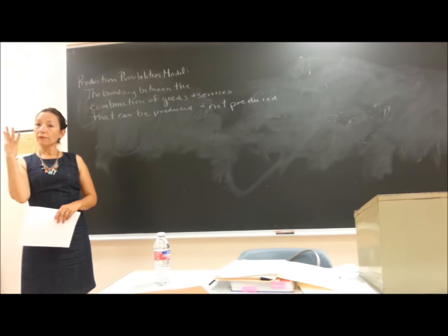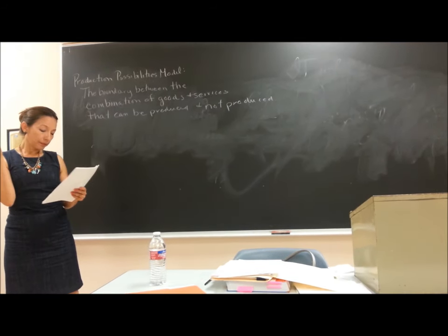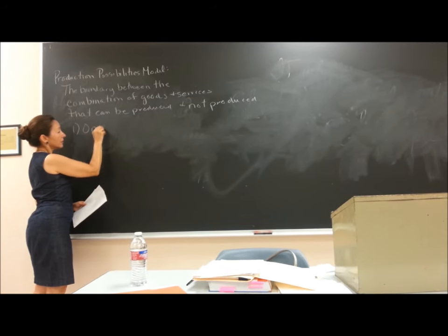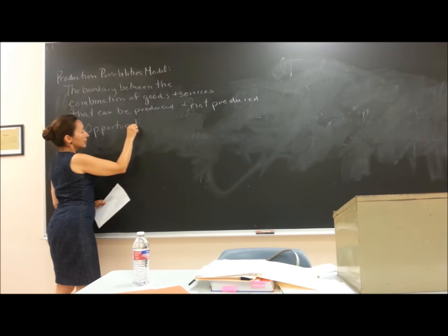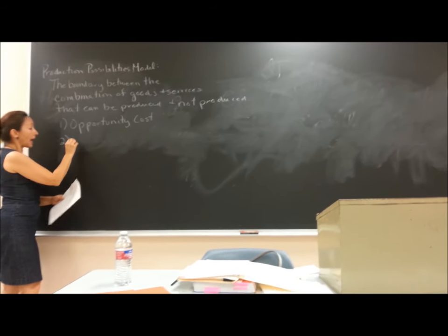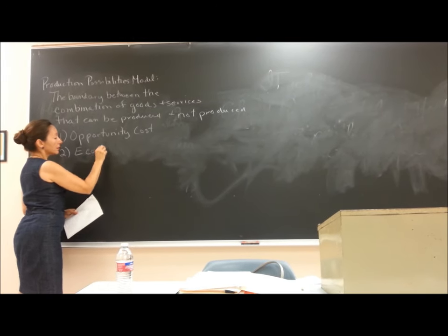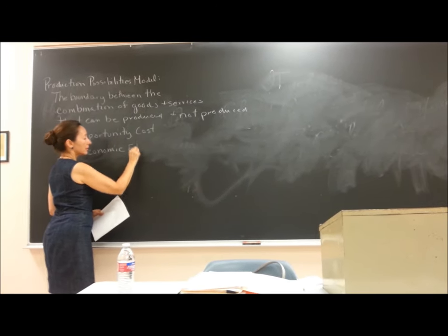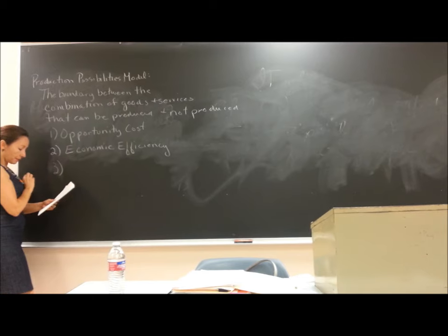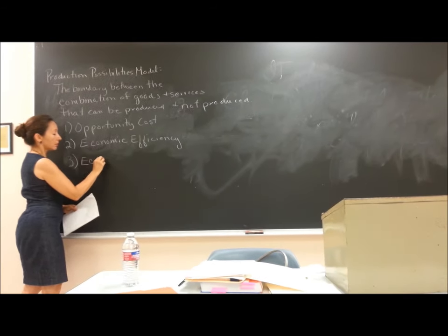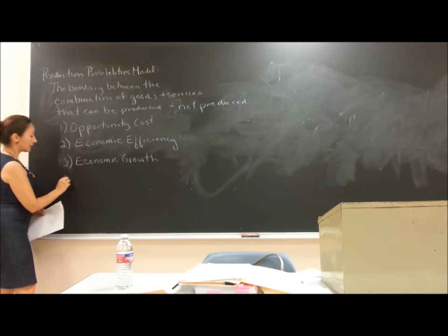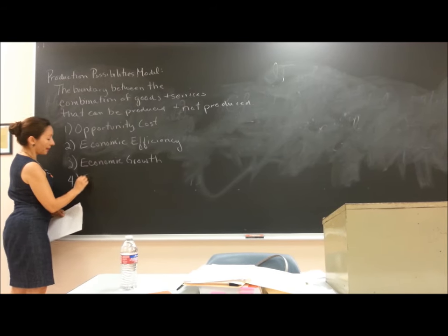We use this model to explain four key concepts in economics. The first is opportunity cost. The second is economic efficiency. The third key concept is economic growth. And finally, the fourth concept is comparative advantage.